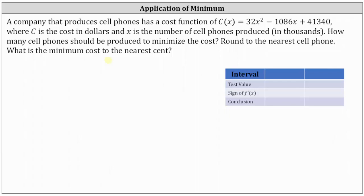First, notice how the cost function is a quadratic function, so normally the domain would be all real numbers. But in this case, because x is the number of cell phones in thousands, we know x must be non-negative, so the practical domain is the interval from zero to infinity, closed on zero and open on infinity.